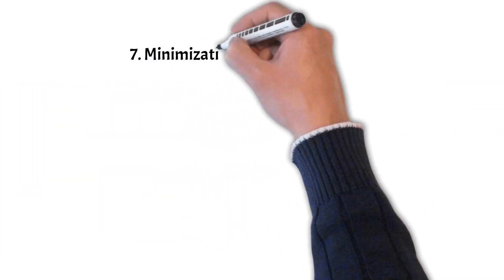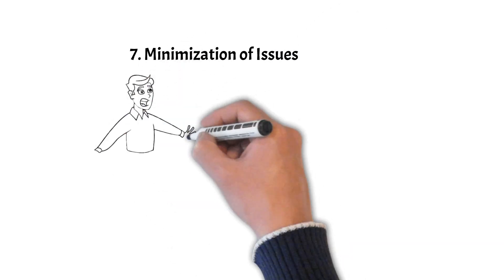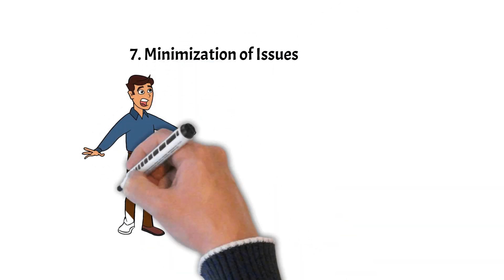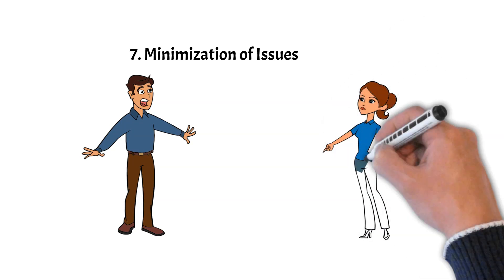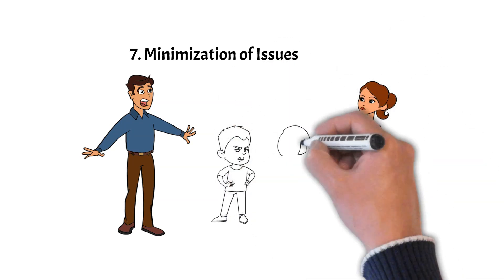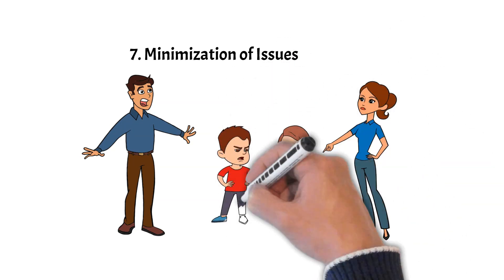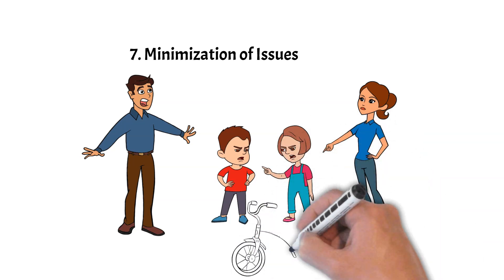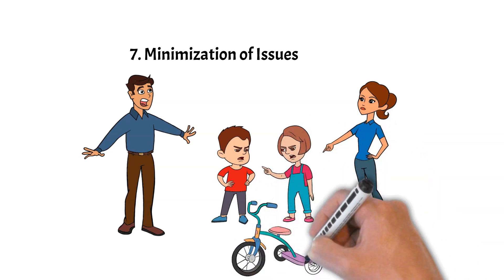7. Minimization of Issues. When confronted with problems or conflicts, a type 7 might downplay the issue or make light of it, which could be frustrating for those seeking validation or trying to make a genuine resolution to the problem.